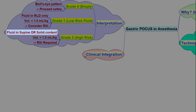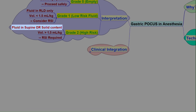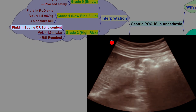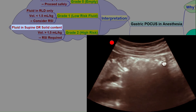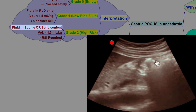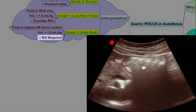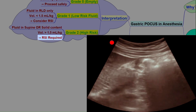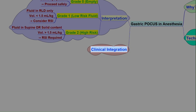Grade two is high risk. High risk means either fluid visible in the supine position, indicating a large volume, or solid content. Solid content has a characteristic frosted glass or heterogeneous appearance. In this case, rapid sequence induction is required.